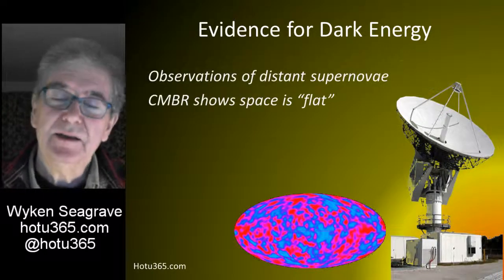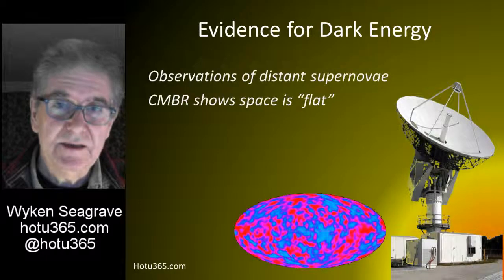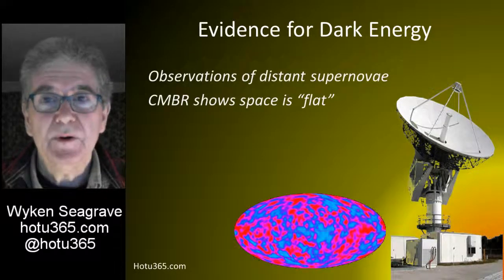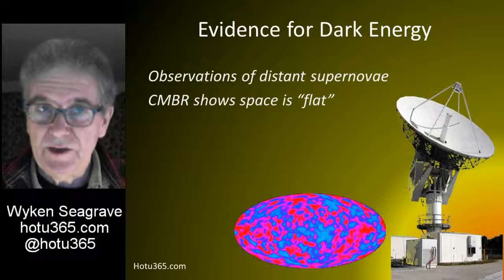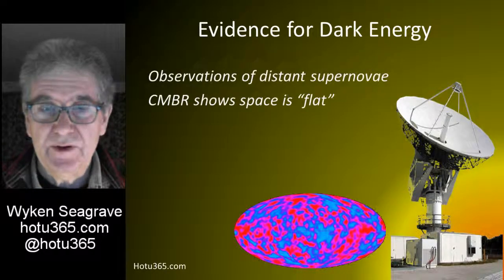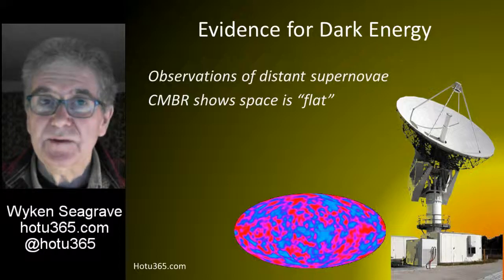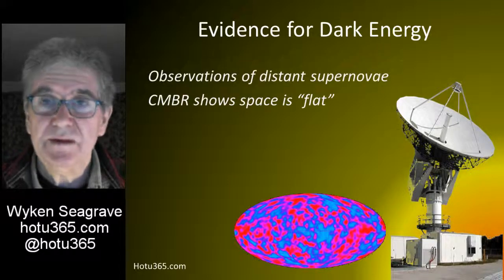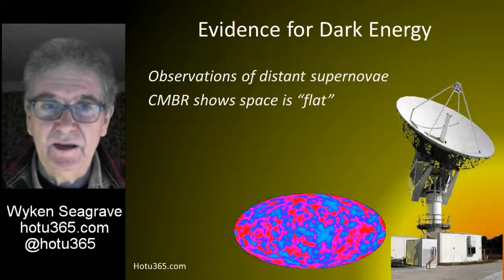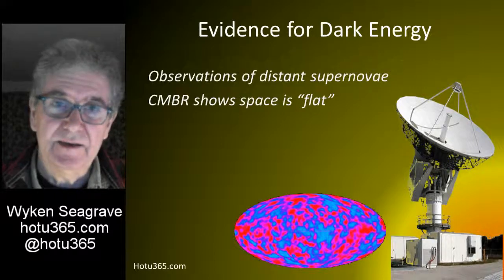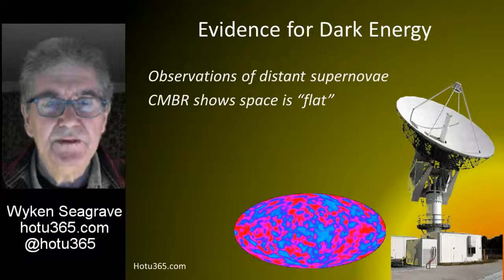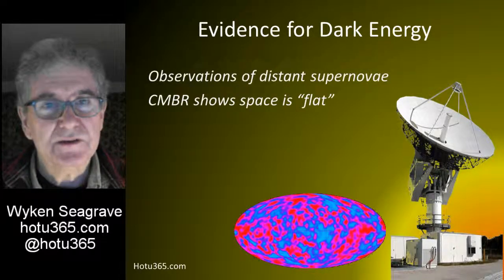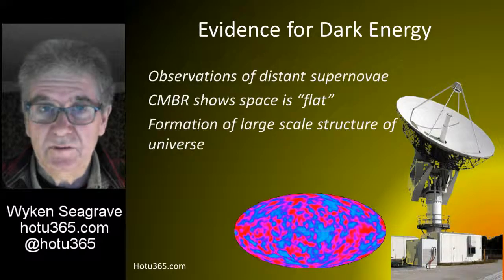And it's the same apparently with space - space is almost flat. Now theory says that for space to be flat there must be more energy than we have found in the visible matter and even in the dark matter. Those two together do not give us enough energy to explain why space is flat. So that's the second piece of evidence that points towards the existence of something we call dark energy.